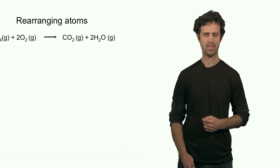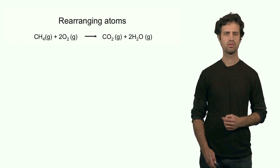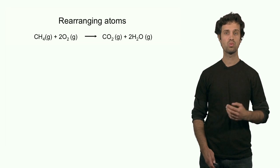In a chemical reaction, the atoms of the reactants are rearranged to form new compounds that we call products. Now here again is the combustion reaction of methane. One methane molecule reacts with two oxygen molecules to form CO2 and two water molecules.